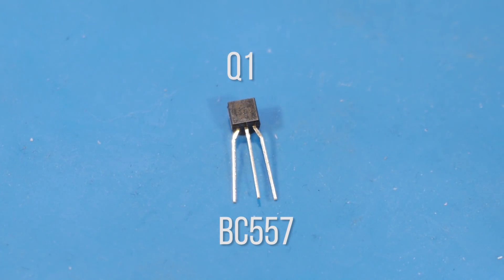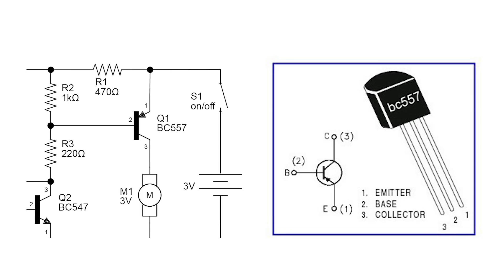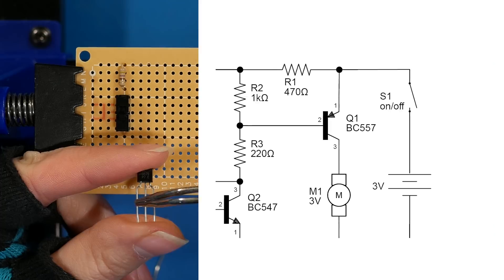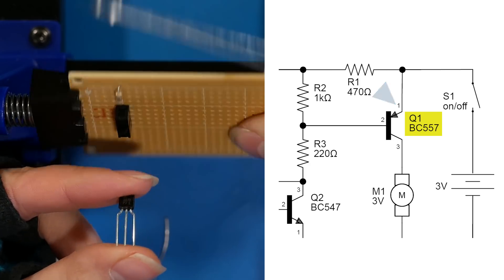Next we'll place Q1, which is a BC557 transistor. Now by looking at the schematic, we can see that we need the emitter, which is this pin, to go to the switch.